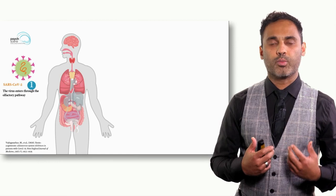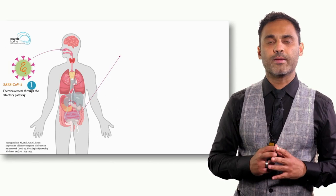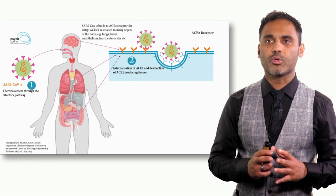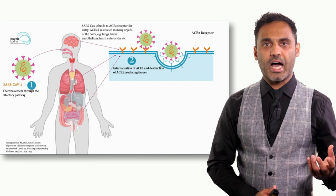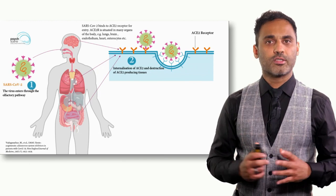The virus enters primarily through the olfactory pathway — through the nose — though there's evidence it can also enter through the eyes. The ACE2 receptor is situated in olfactory ciliary cells and goblet cells, with many ACE2 receptors present. These ACE2 receptors are also situated in several other organs: lungs, endothelium (the lining of blood vessels), heart, enterocytes, the intestines, and also the brain — which is why the virus affects multiple organs.